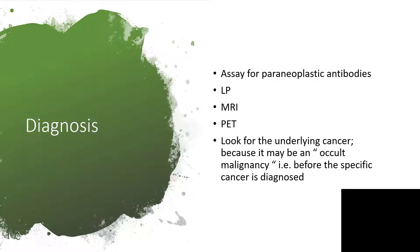How do we make the diagnosis? We are going to assay for paraneoplastic antibodies — there are specific antibodies for that — and once that is done, we'll be able to confirm the diagnosis. We're going to do a lumbar puncture and assay the content of cerebrospinal fluid, magnetic resonance imaging, PET scan, and look for the underlying cancer because it might be an occult malignancy. Before the specific cancer is diagnosed, the affected individual may already be presenting with paraneoplastic syndrome.